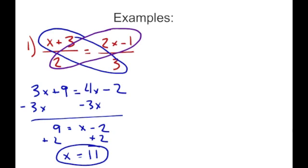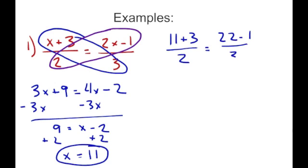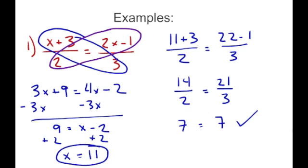We substitute back in: (x plus 3) over 2 equals (2x minus 1) over 3, so (11 plus 3) over 2 equals (22 minus 1) over 3. That gives 14 over 2 equals 21 over 3. Fourteen over 2 equals 7, and twenty-one over 3 equals 7. So we see that answer is correct.